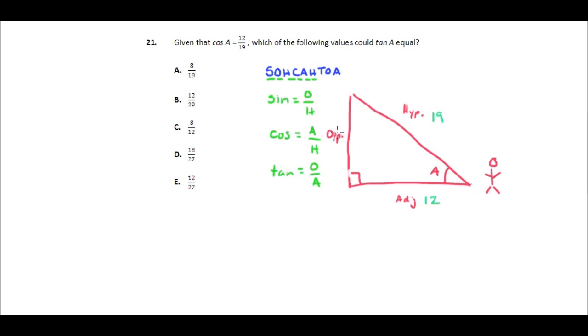So now they ask, what could the tangent be? Well, the tangent is the opposite side over the adjacent side. So the opposite side, we don't know, so let's just call that X. So tangent equals X over, and we do know the adjacent side, which is 12. So we know that the tangent of A has to be something over 12.